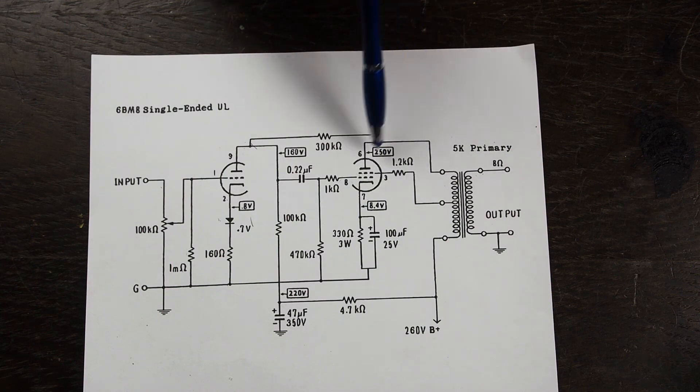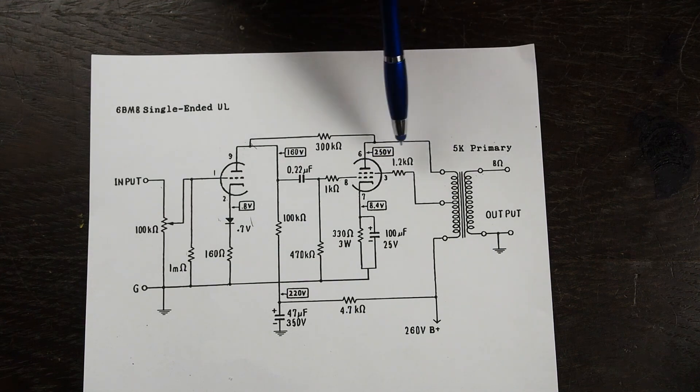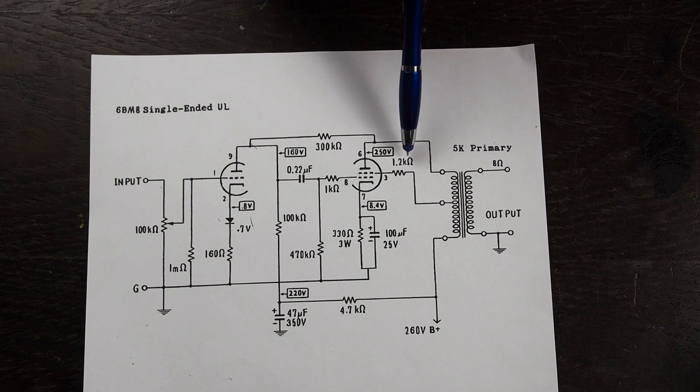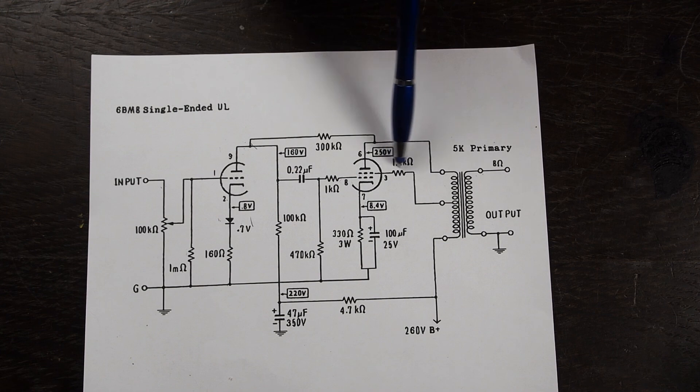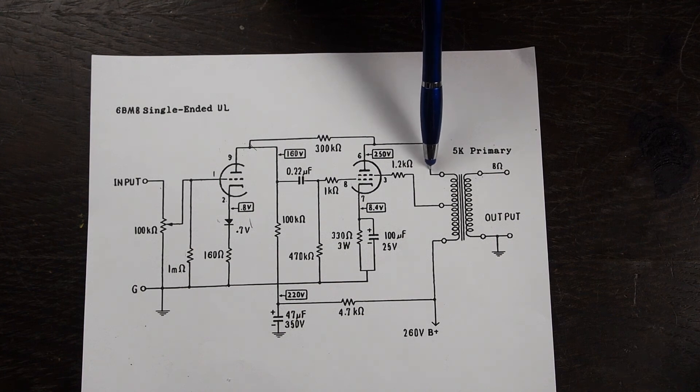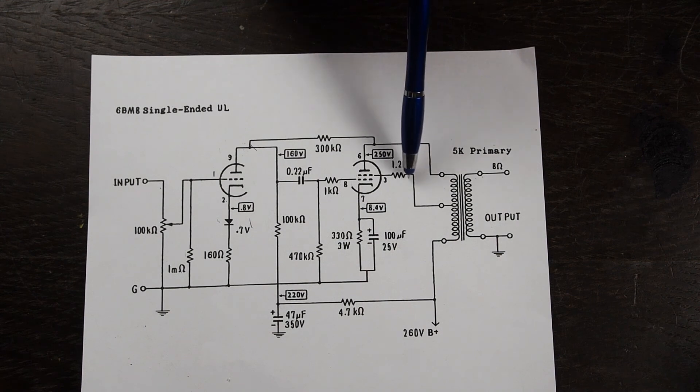This type of design with ultralinear is less prone to distortion and while you could set this amp up as a triode strapped design instead of an ultralinear which would mean that you would change this resistor to maybe a 300 or 400 ohm resistor and connect it straight to this side of the output transformer, it would put out less power than it will as an ultralinear.